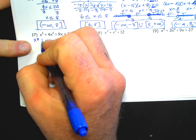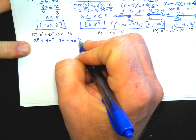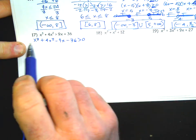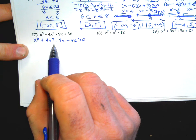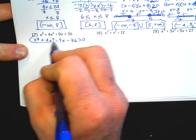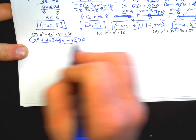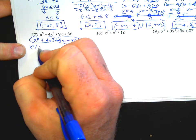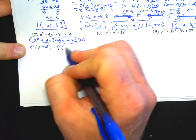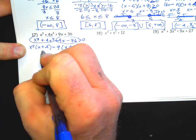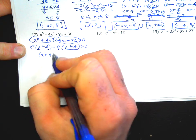Number 17: move everything to one side — x cubed plus 4x squared minus 9x minus 36 greater than zero. This is a cubic, so you might need the rational root theorem, but another option is grouping. Grouping requires an even number of terms. In standard form, group the first two and take out the GCF of those two, then group the last two and take out the GCF of those two — giving negative nine.